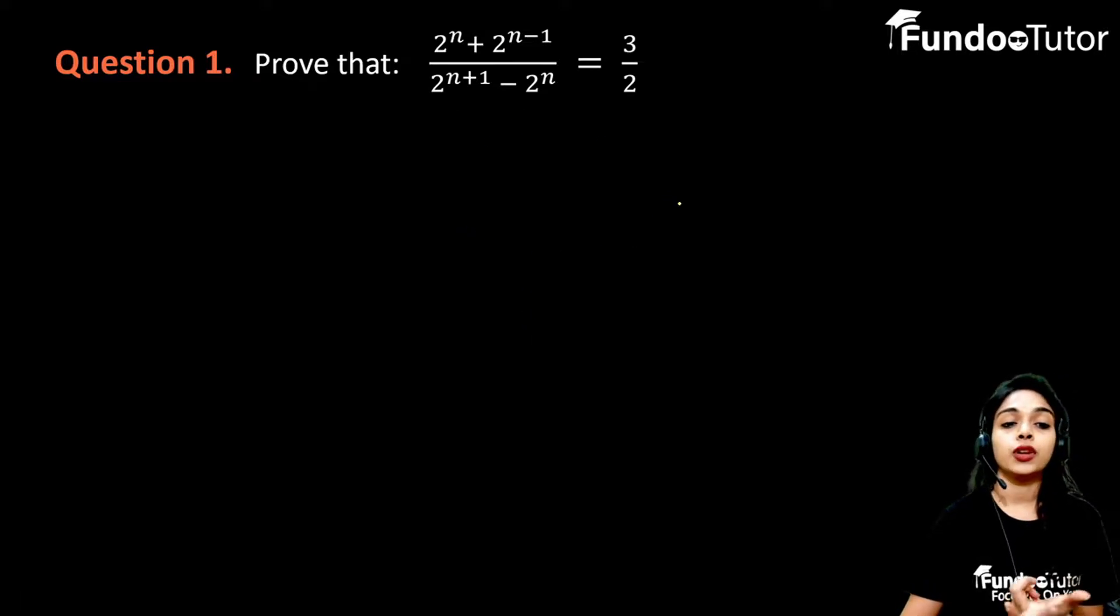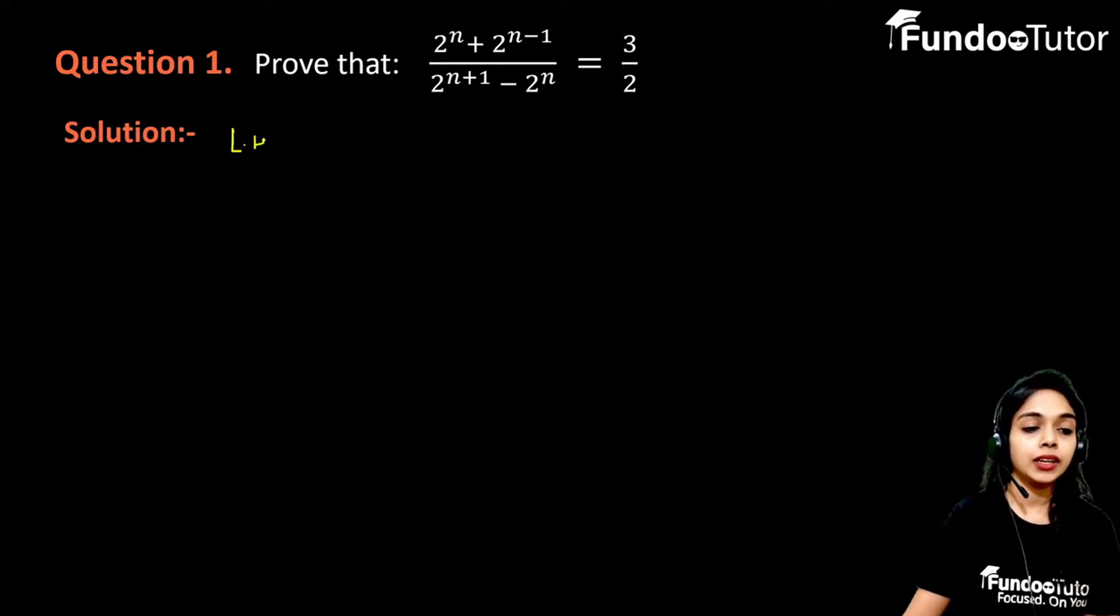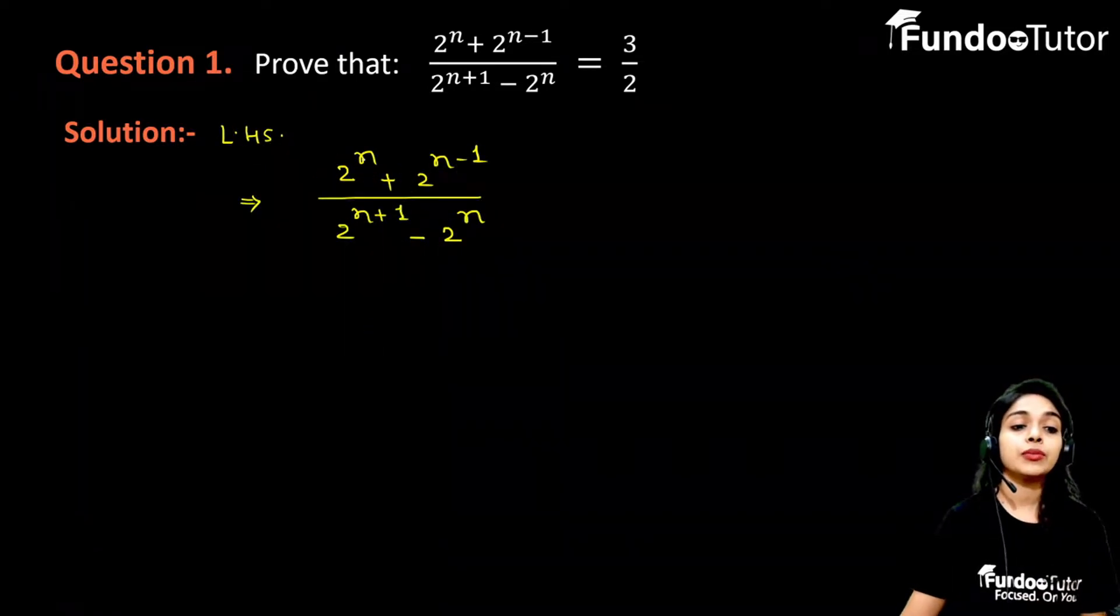We need to prove the left hand side portion equals the right hand side. So let's take the left hand side part first: 2 to the power n plus 2 to the power n minus 1 divided by 2 to the power n plus 1 minus 2 to the power n. Now, let's simplify it.